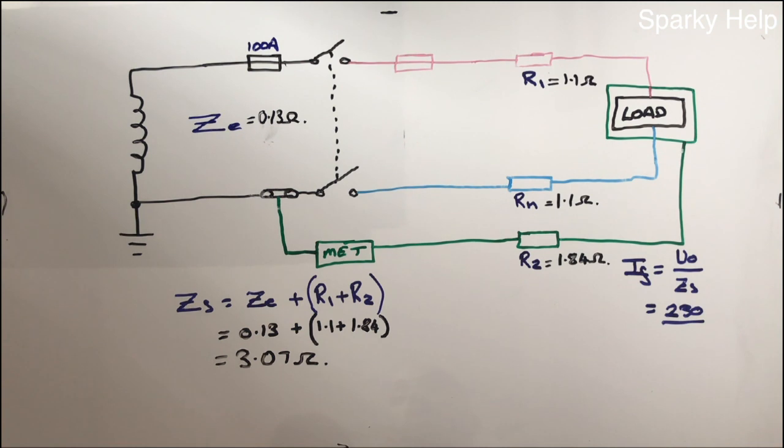So this will give us a value of 0.13 for ZE plus 1.1 plus 1.84 gives it a grand total of 3.07 ohms. So that is ZS for this particular circuit, which now allows us to calculate the fault current.